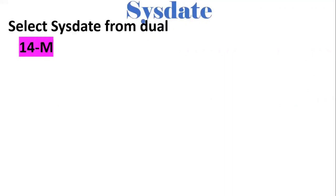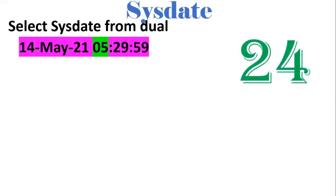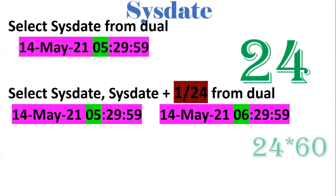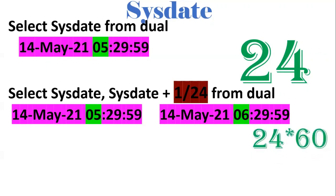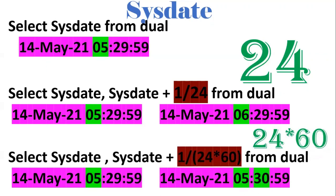Next one is SYSDATE. SYSDATE gives the current date and timestamp. The current time is like 14 May 2021 05:29:59. We know that a day has 24 hours. If you want to add one more hour to the existing timestamp, we need to divide 1 by 24, so 5 becomes 6. To add one minute, SYSDATE plus 1 divided by 24 divided by 60 — so 5:29 becomes 5:30:59. This concept we'll use in OTP generation and OTP validation.